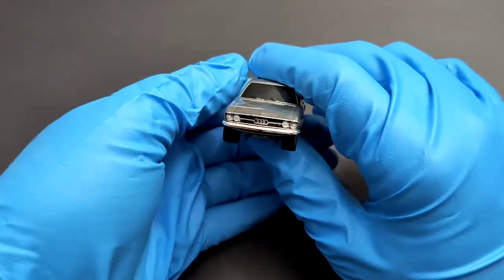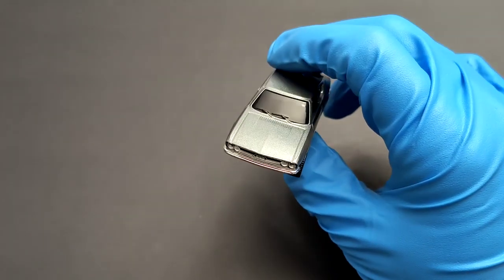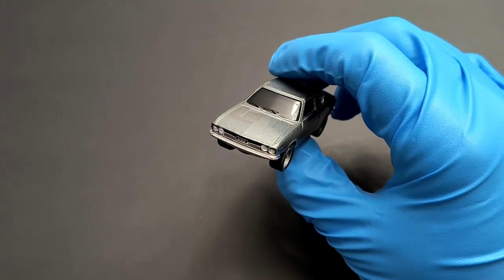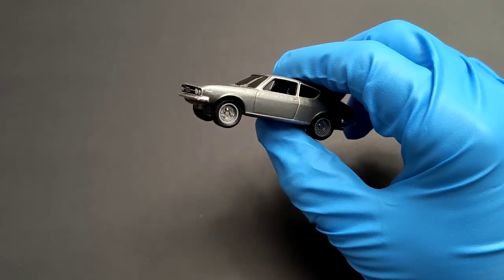the Audi badge, quad headlamps that are nicely detailed, chrome bumper, and windscreen wipers. The windows and windscreen are tinted, so you can't really see inside, but the interior is done in black. Now moving to the